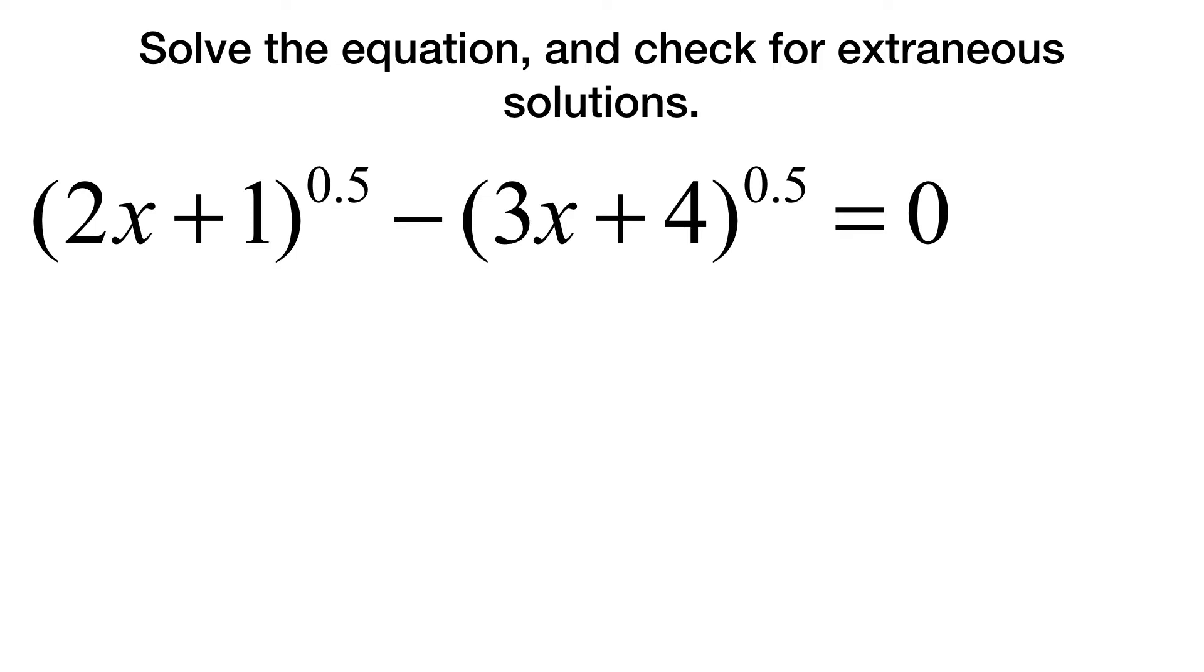Alright, let's try this one. So you'll notice this time it says .5. Remember, x to the point 5 is the same as the square root of x. Meaning, we're really just going to do the same thing. Our first step is move over the 3x plus 4. At which point, we get the square root of 2x plus 1 equals the square root of 3x plus 4.